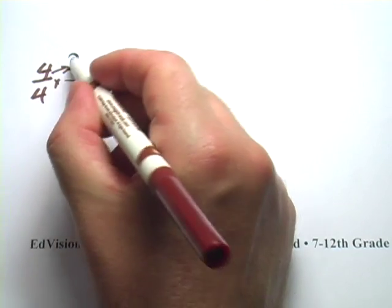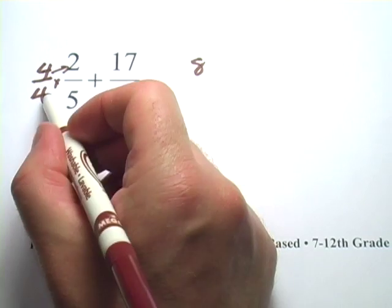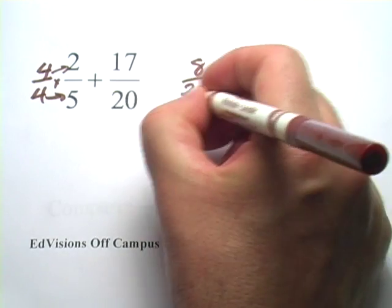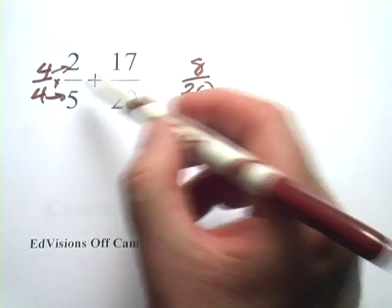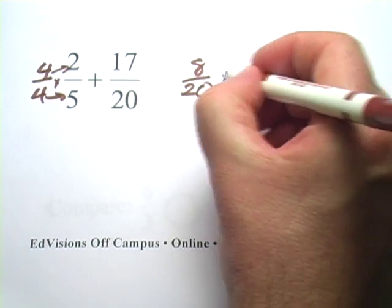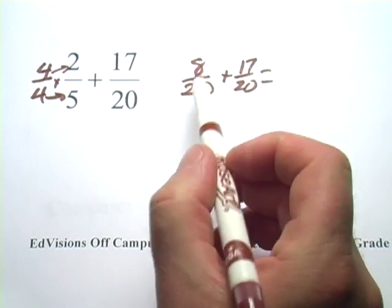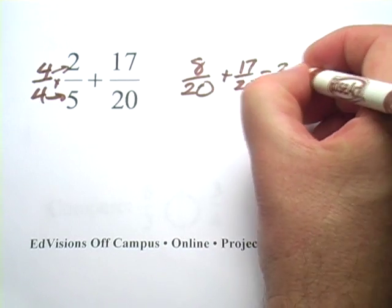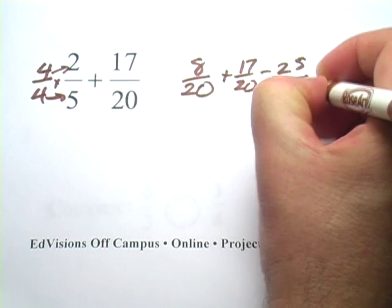I multiply across the top, four times two is eight. Multiply across the bottom, four times five is twenty, and I've got this new version of two fifths that's in twentieths, eight twentieths, plus seventeen twentieths. Then I add these together, let's see, eight plus seventeen is twenty-five, twentieths.